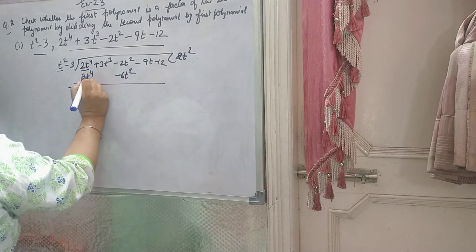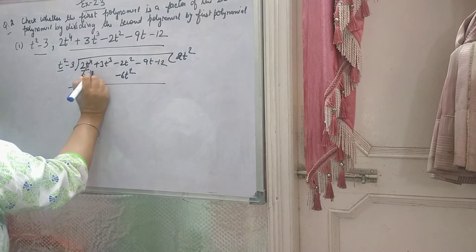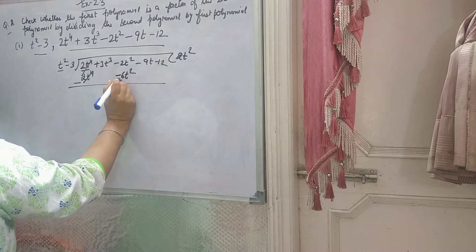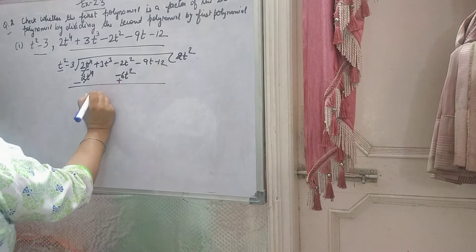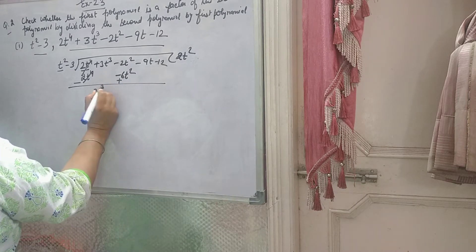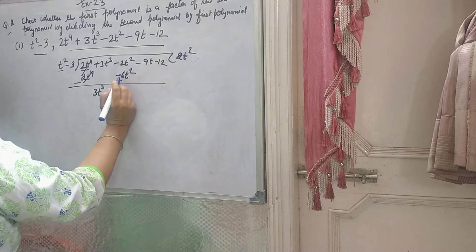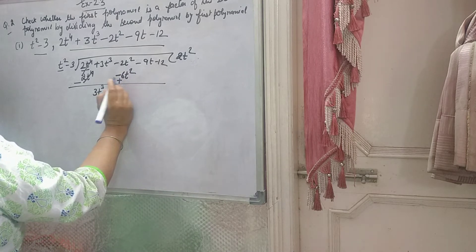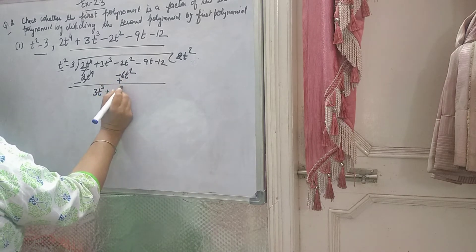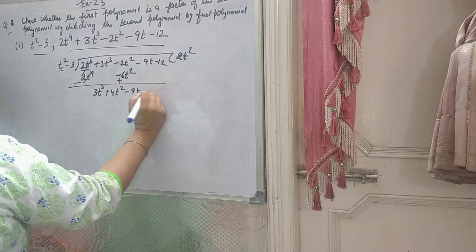Now subtract. 2t⁴ minus 2t⁴ is 0, you will cancel. The sign minus becomes plus. Again, write highest degree first, then minus 2 plus 6. One minus, one plus, you will subtract and take sign of bigger one. So 4t² will come, then minus 9t minus 12.